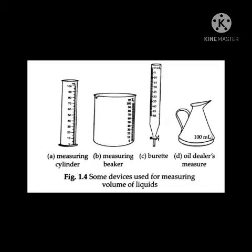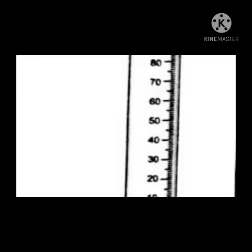These devices come in sizes such as 50 ml, 100 ml, 200 ml, 250 ml, and 500 ml. They are graduated and the capacity is marked on them. The measuring cylinder is generally of cross-sectional area 100 cm², and it is made of either glass or plastic.